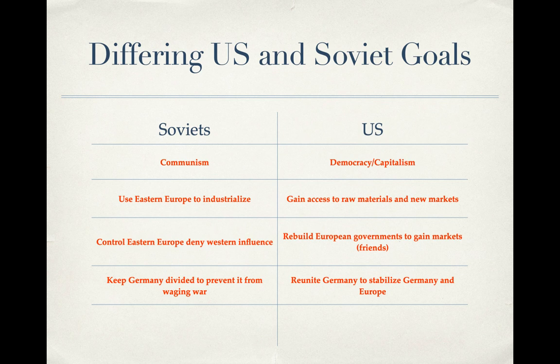Looking at the differing goals between the United States and the Soviet Union, we are clearly on opposite ends of the spectrum. We know from the Industrial Revolution unit that communism and capitalism oppose each other — for communism to succeed, capitalism has to be gone. Having those differing goals puts us at odds. For the Soviet Union, they want communism. For the United States, we have capitalism and democracy. The Soviet Union's idea of communism also brings in a totalitarian regime, which is completely opposite of what we have in our own country.